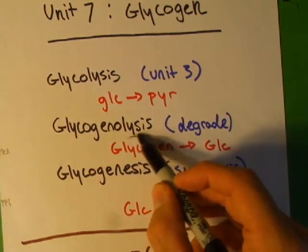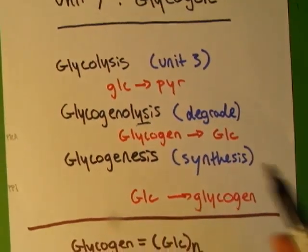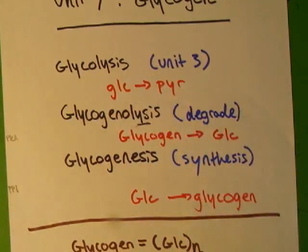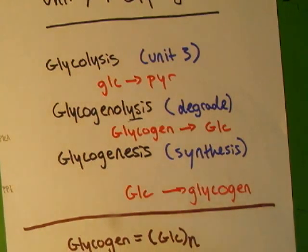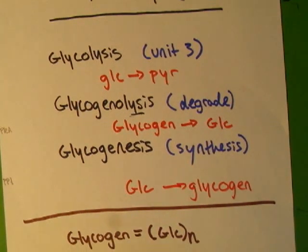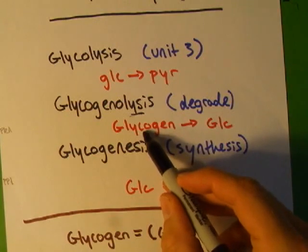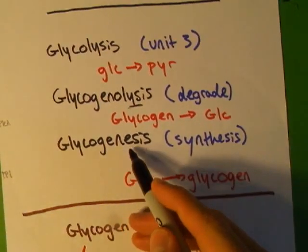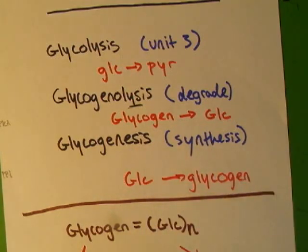Glycogenolysis - lysis meaning degrade. So every time I saw this, I would just cross out this word and write 'degrade' on there so I would know to go to my degradation pathways. That's going from glycogen degrading it to glucose. Glycogenesis is just the synthesis of it, going from glucose to glycogen.